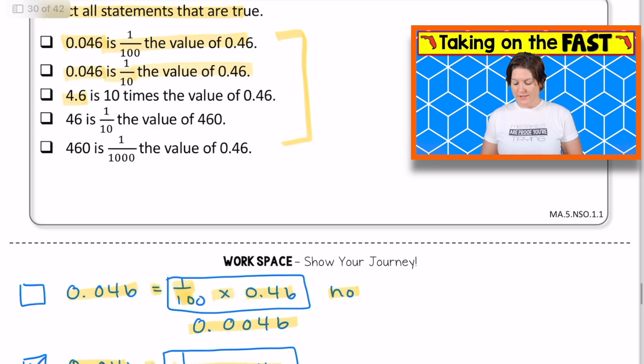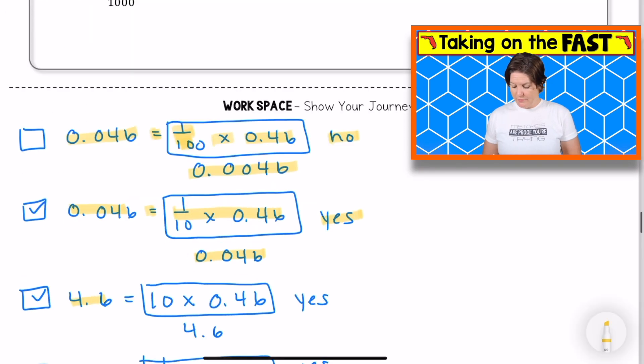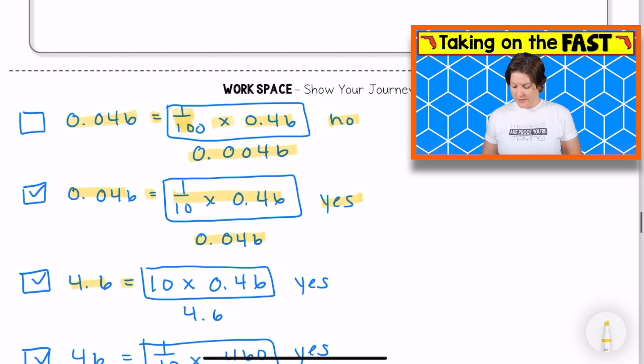And I'll mark it at the end. 4.6 is 10 times the value of 0.46. Bring it down. 4.6 is 10 times the value of 0.46. When I multiply 10 times 0.46, I got 4.6, which matched the other side of the equation. So yes to that one.